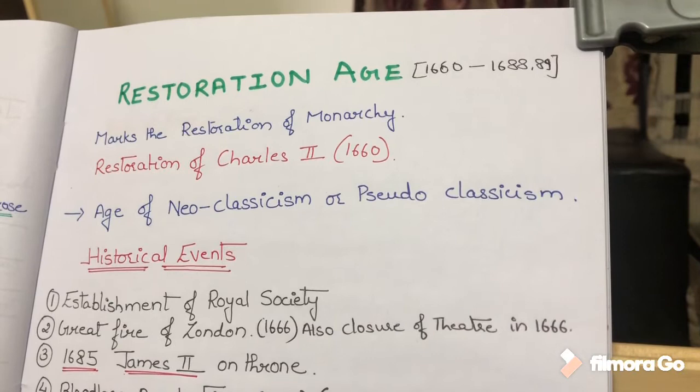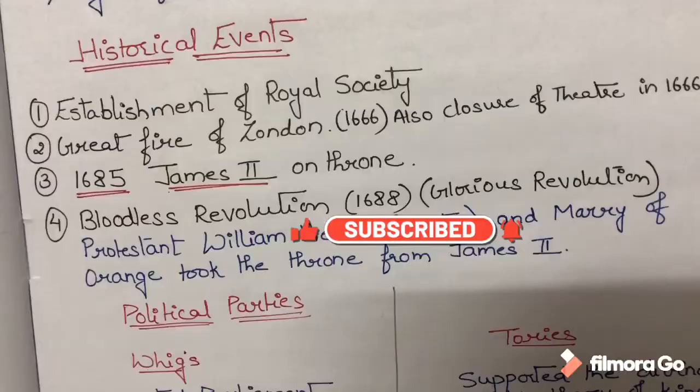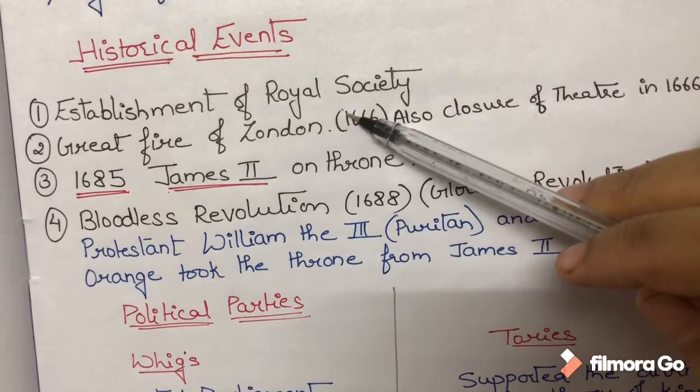This age is also known as the Age of Dryden because the most important writer of this age is John Dryden. Now let's look at some important historical events that took place.